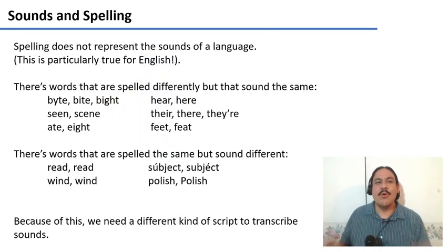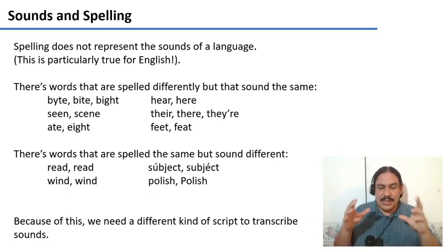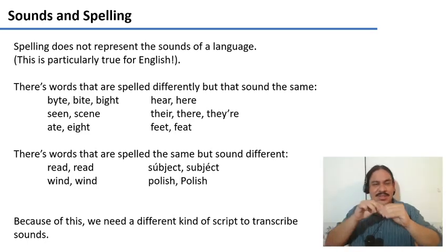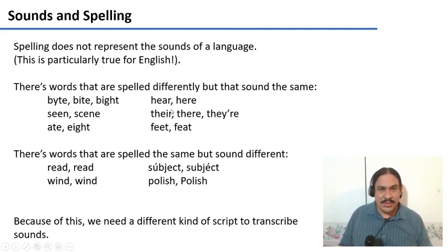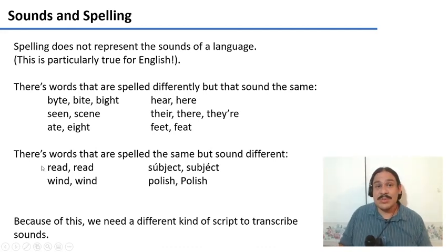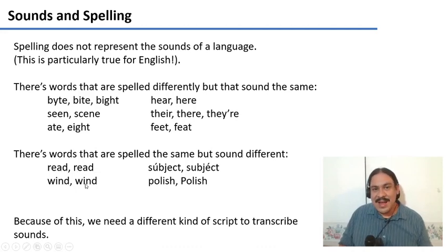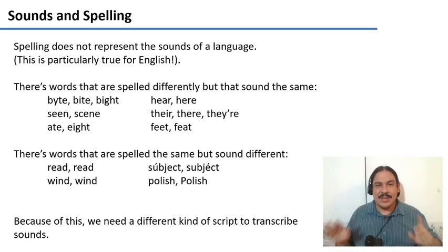English has a very opaque writing system, in that the relationship between the way it's written and the way it sounds is not very clear. In English there are many words that are written differently but sound the same — like 'bite,' 'eight,' 'here,' and so forth. And we also get the opposite, where we have the same letters but different sounds: 'read' and 'read,' 'wind' and 'wind,' 'subject' and 'subject,' 'Polish' and 'polish.' So writing is not a reliable way to look at the sounds of a language.